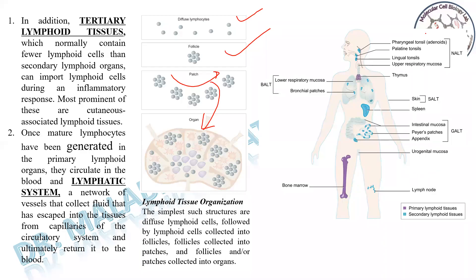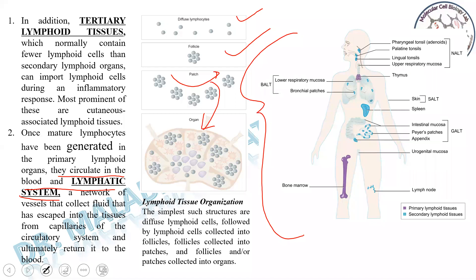Once mature lymphocytes have been generated — in the case of T cells in the thymus, and B cells in the bone marrow — they move into the secondary lymphoid organs for further maturation and antigenic exposure. These lymphocytes then circulate in the blood and the lymphatic system. The lymphatic system is a network of vessels that collects fluid that has escaped into tissues from capillaries of the circulatory system.